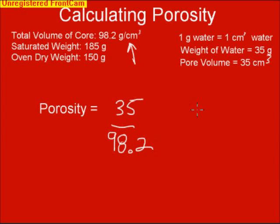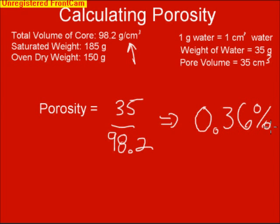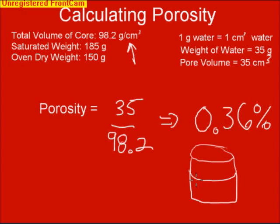Our total porosity equals 35 divided by our total core volume of 98.2, which gives us 0.36. So 36% of our 98 cubic centimeters of volume is made up of pores. Looking at this visually, one third of our volume is pore space and two thirds is solid.